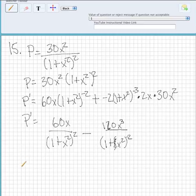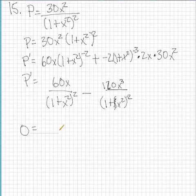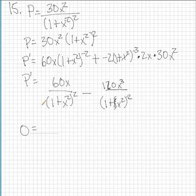So now we want to set this equal to zero and solve for x. This seems a little difficult, but what we want to do is multiply the top and bottom by one plus x squared to the third so we can have the same denominator.